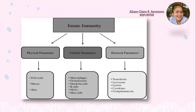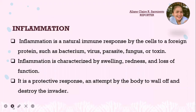The cellular parameters include macrophages, granulocytes, dendritic cells, B cells, and mast cells, which are involved in inflammation. The humoral parameters include transferrin, lysozyme, lectins, cytokines, and the complement system, which are involved in the production of antibodies and represent an important mechanism to prevent bacterial diseases.